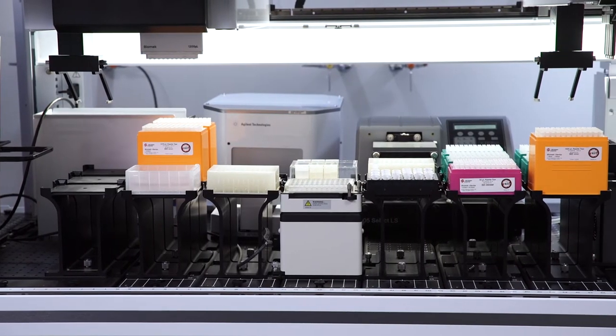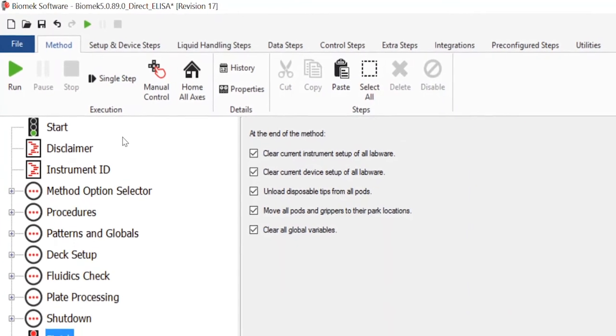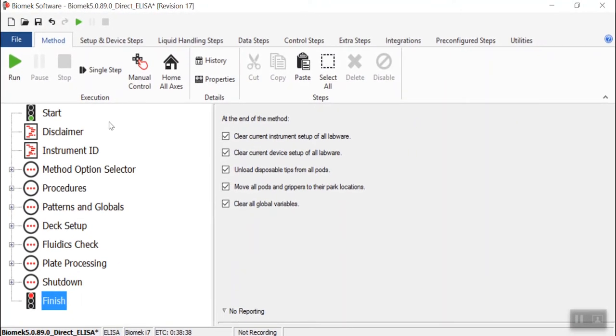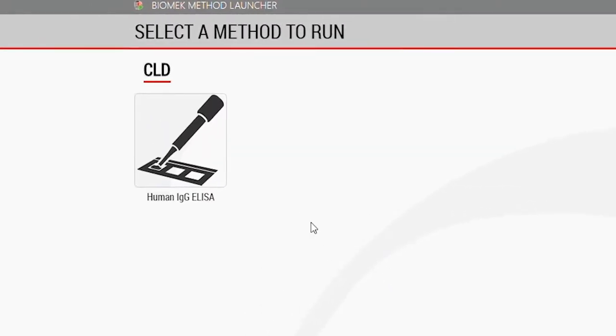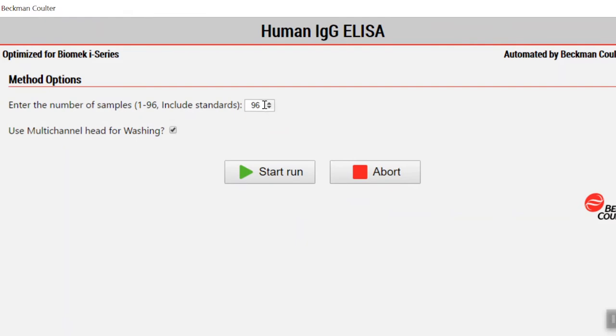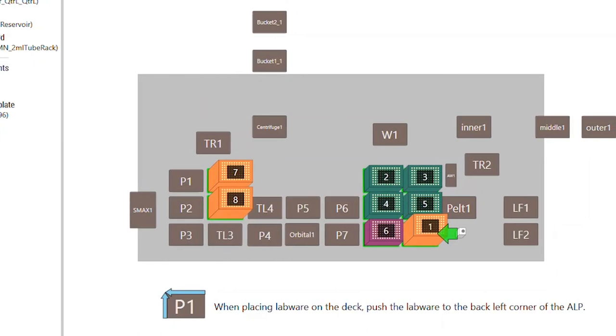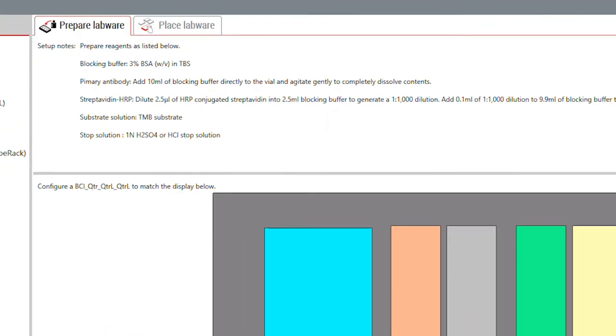By using a liquid handler you can overcome these sources of variability. The Biomek software lets you build your ELISA method using existing steps making it easy to write your method. You start your method using the app-style Biomek Method Launcher. Then Guided Labware Setup provides specific text and graphical setup instructions with reagent volume calculations and step-by-step instructions to prepare reagents.